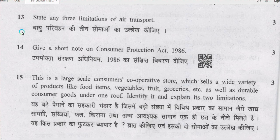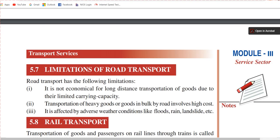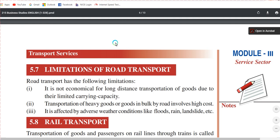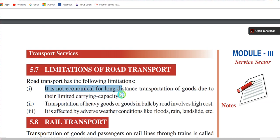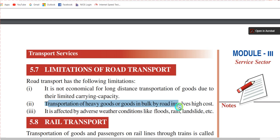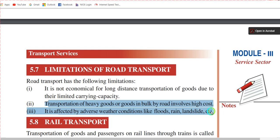Question number 13: state any three limitations of air transport. Chapter number 5 — first, it is not economical for long distance transportation of goods due to their limited carrying capacity. Second, transportation of heavy goods by road involves high cost. Third, it is affected by adverse weather conditions like flood, rain, landslide, etc.